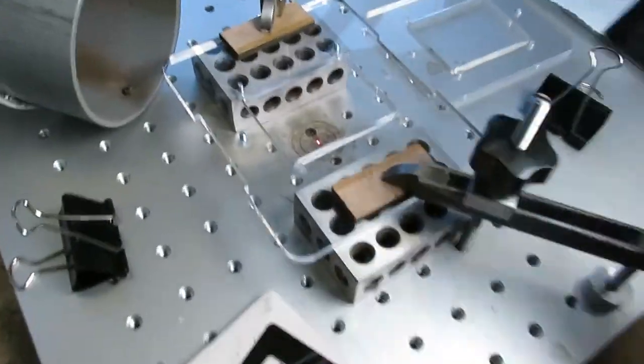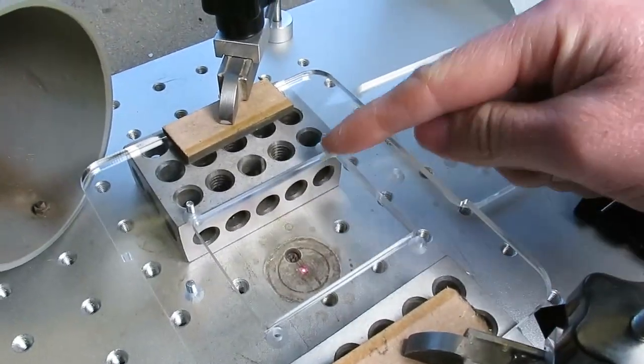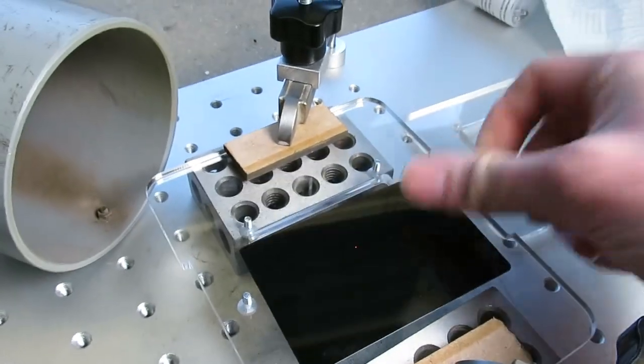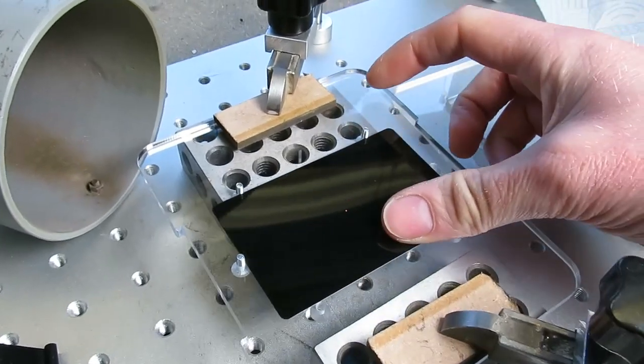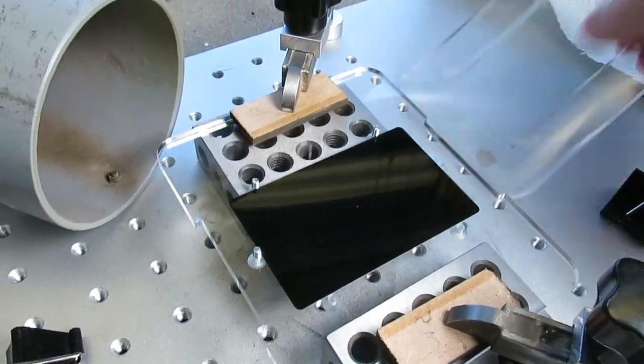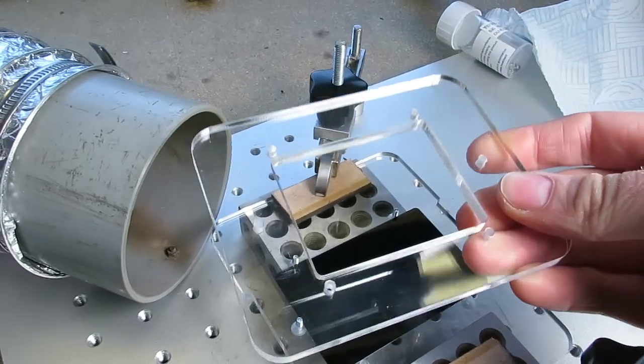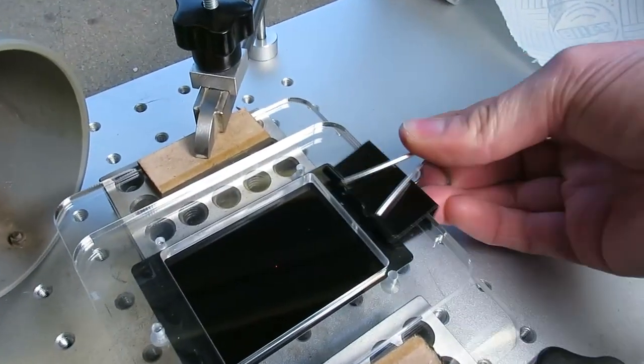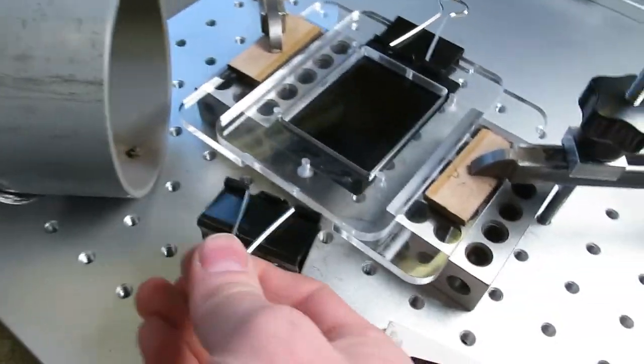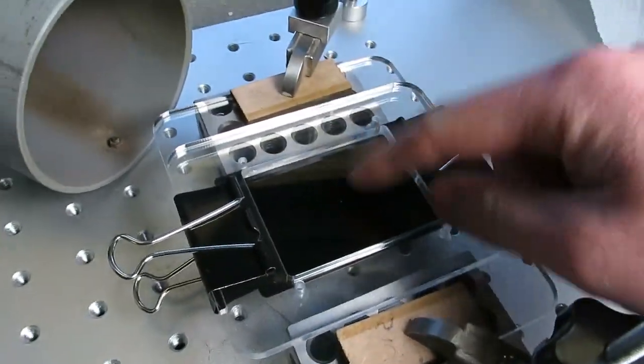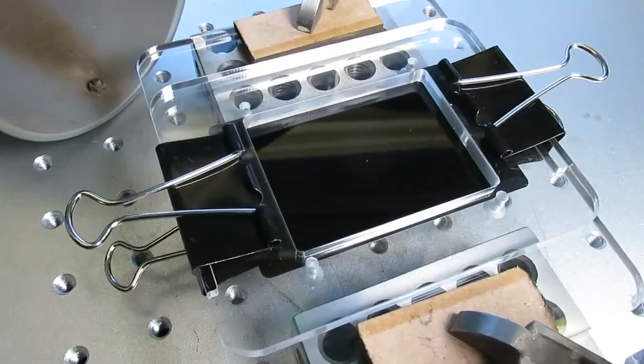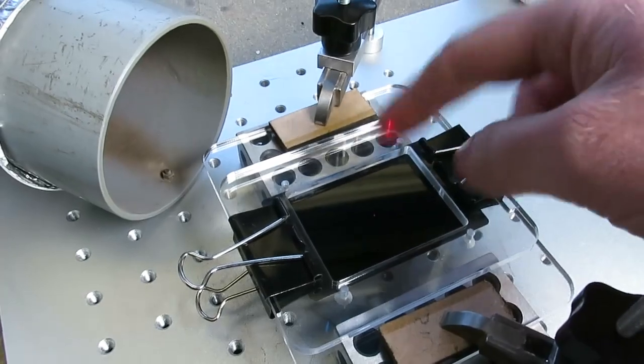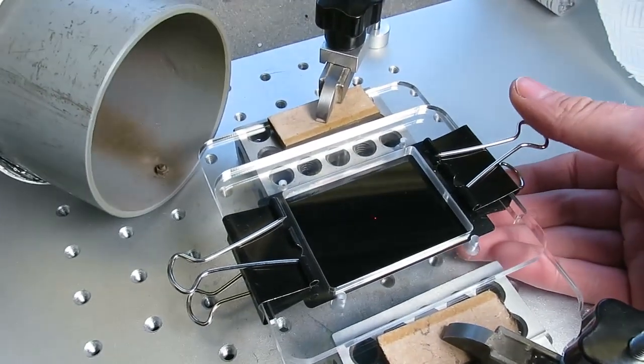They're held in a little jig I made with three locating screws so the card can just be sat in against the screws, and then another piece on top goes over and a couple of binder clips either side hold it down. I had to do this because the business card material being so thin tends to curl up as you're cutting multiple pieces out of it.